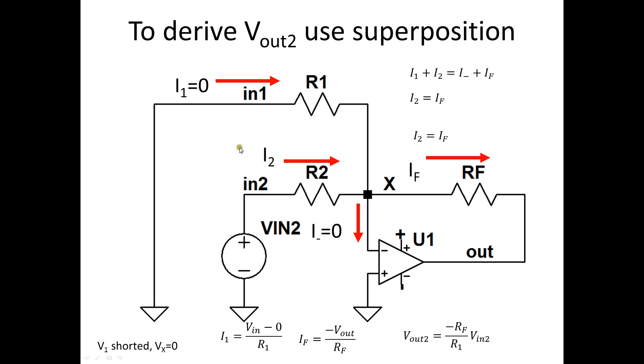And in a similar fashion to find Vout2, we short Vin1. Now I1 is equal to zero, I2 is now equal to If, and we get Vout equals minus Rf divided by R2.